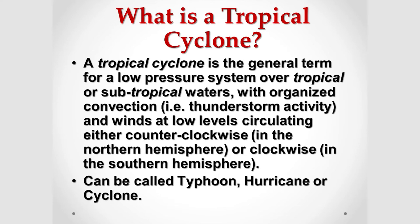First, we're going to start off with what is a tropical cyclone. A tropical cyclone is generally a tropical storm that originates in subtropical waters and has organized convection. That means it has a rotation to it and winds that are in a circulating motion, usually counterclockwise in our hemisphere, or clockwise motion if you're in the southern hemisphere.